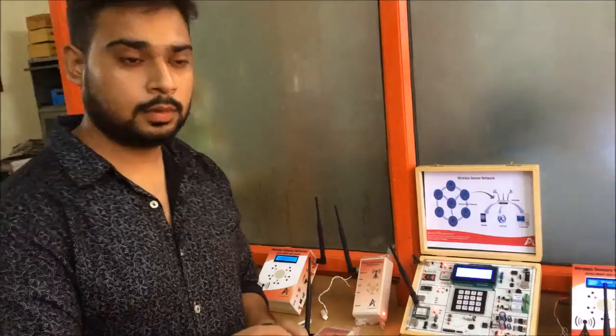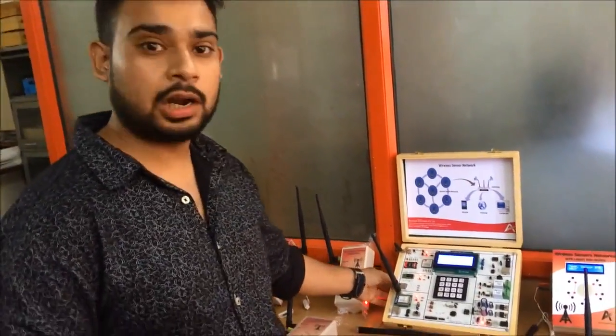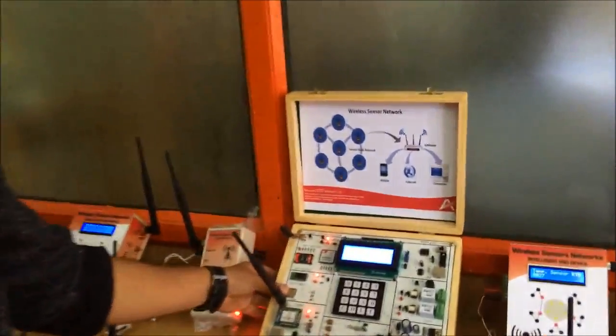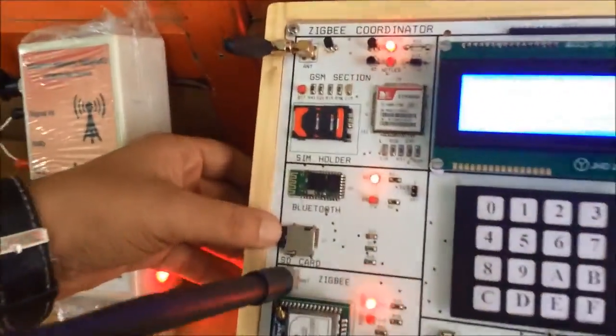This is all about how we can interface the Bluetooth to our coordinator. The next feature is the SD card, onboard SD card on our coordinator. This is the SD card over here.